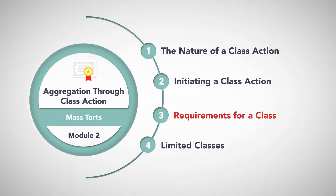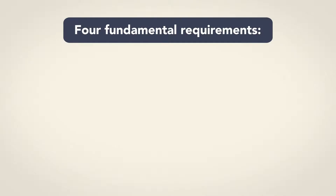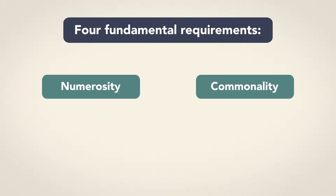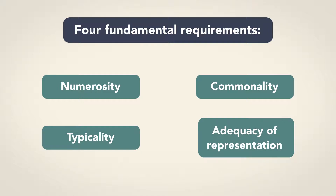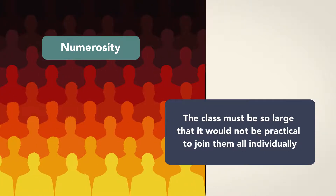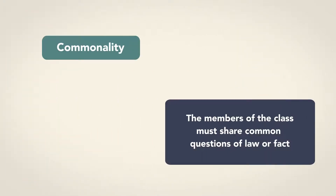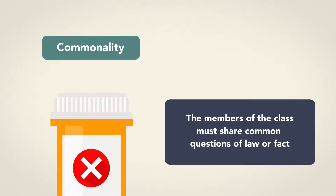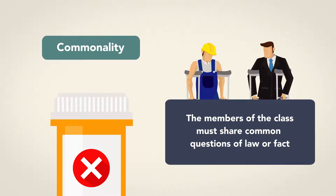Requirements for a class. There are four fundamental requirements that all proposed classes must meet, often referred to as the requirements of numerosity, commonality, typicality, and adequacy of representation. Numerosity means the class must be so large that it would not be practical to join them all individually. Mass torts, by definition, involve a very large number of claims, so they almost always have numerosity. Commonality means the members of the class must share common questions of law or fact. Mass torts typically arise from a common factual circumstance — a single product such as a pharmaceutical, or a single act like the explosion of an offshore drilling rig, is alleged to have caused factually similar harms to all those who have those claims.